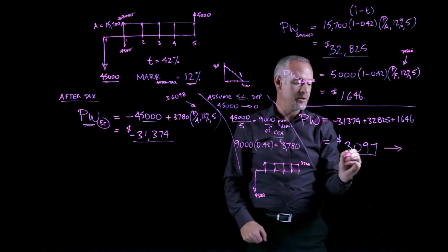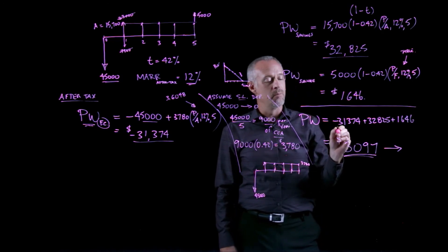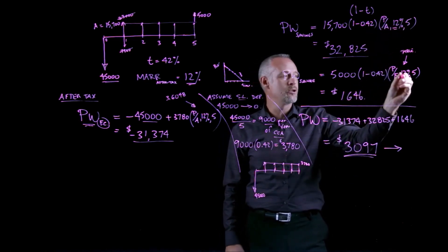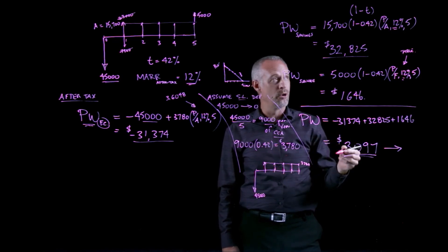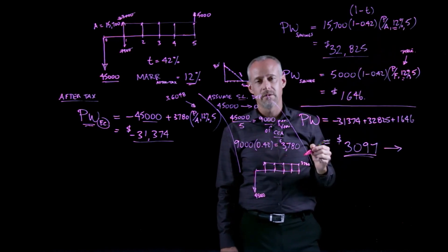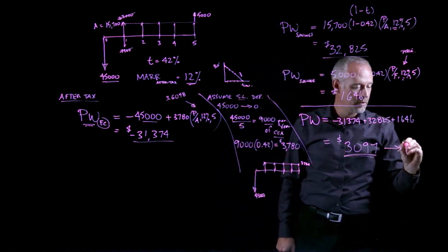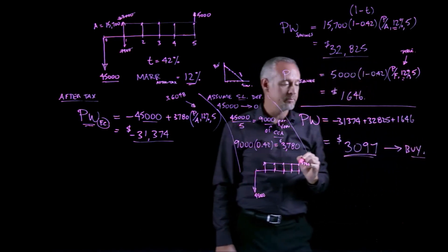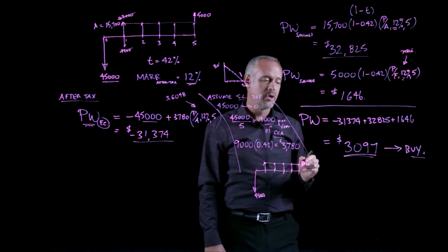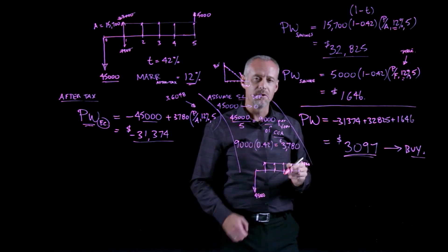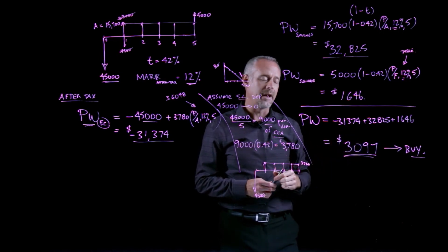This positive value, so remember from our present worth analysis, if we use the company's MAR as our, in our time value of money calculations, and we arrive at a positive present worth, that means the investment at least earns the 12% MAR. So here we are, we've got a healthy positive value, that means we should buy the equipment. So in this problem, we've calculated the present worth after-tax of the purchase of an asset that has a continuing benefit over time as an annuity and a salvage value.